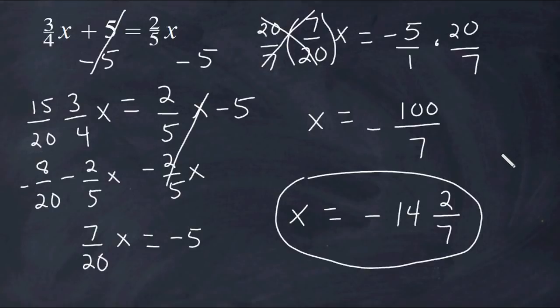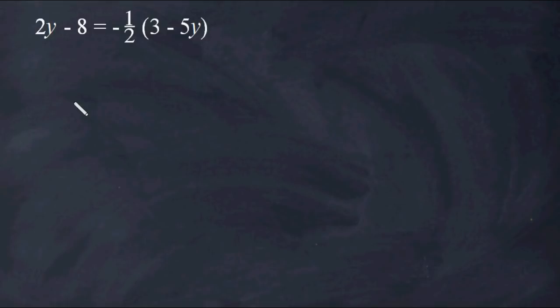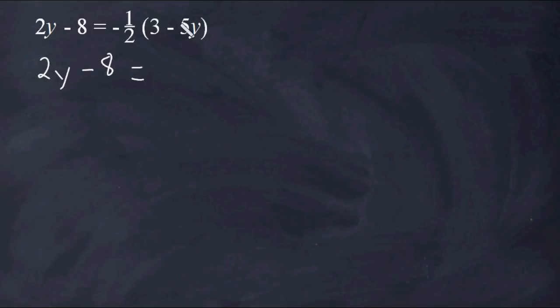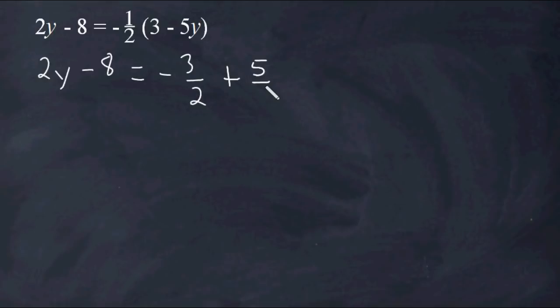Let's try one more example. In this example, notice that on the right-hand side of our equation we have a fraction on the outside of parentheses. This means we have to apply the distributive property to this half of our equation. So let's rewrite our equation as 2y minus 8 equals negative 1 half times 3, which is a product of negative 3 halves, and negative 1 half times negative 5y is positive 5 halves y.